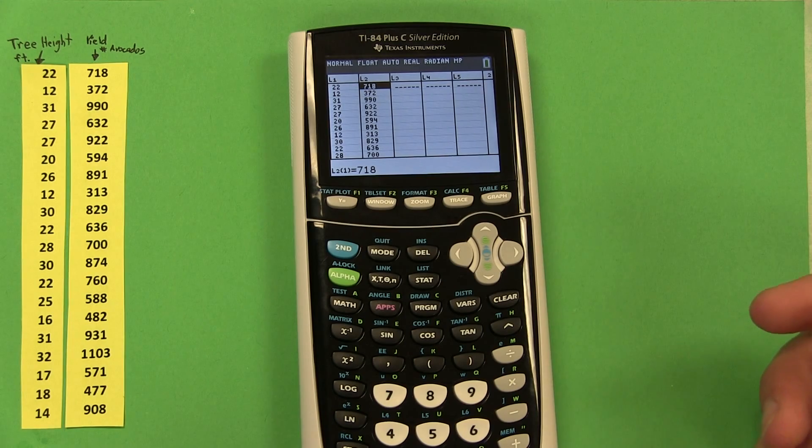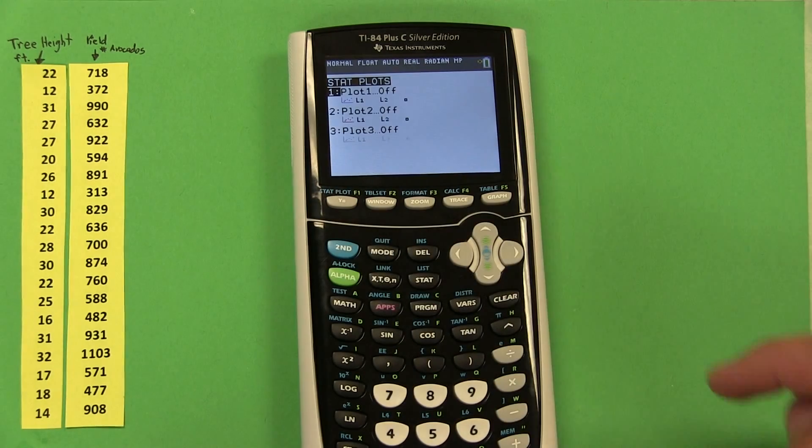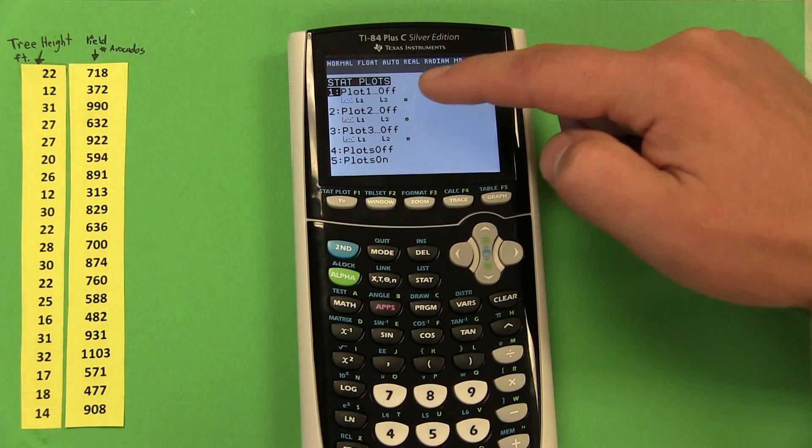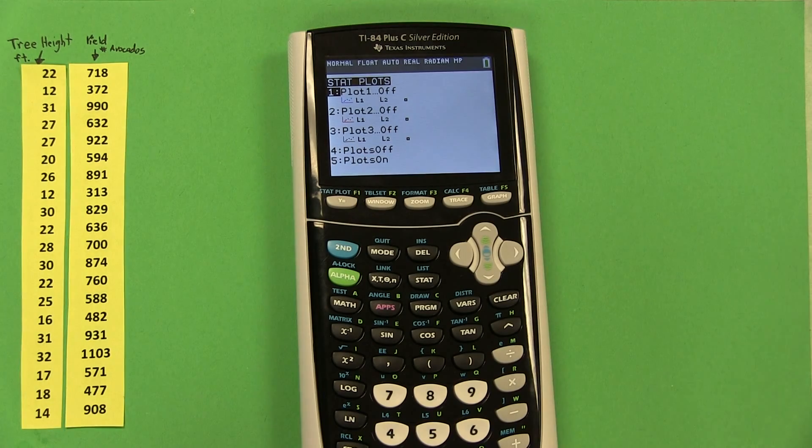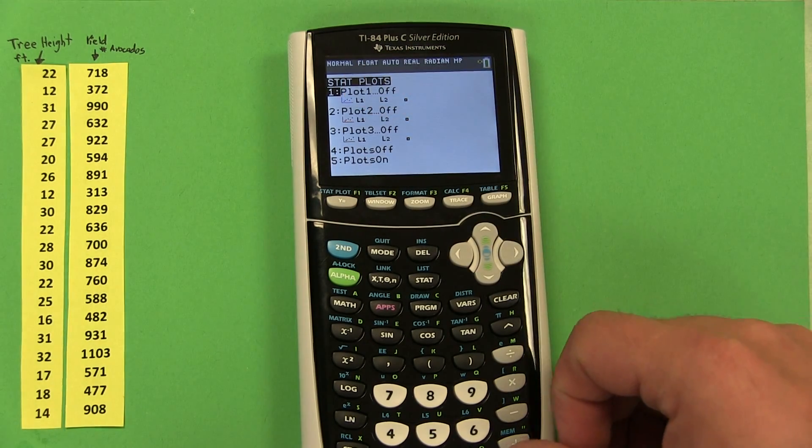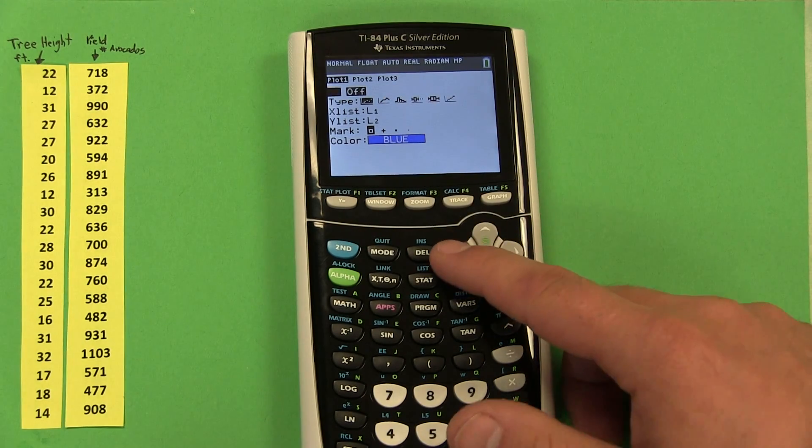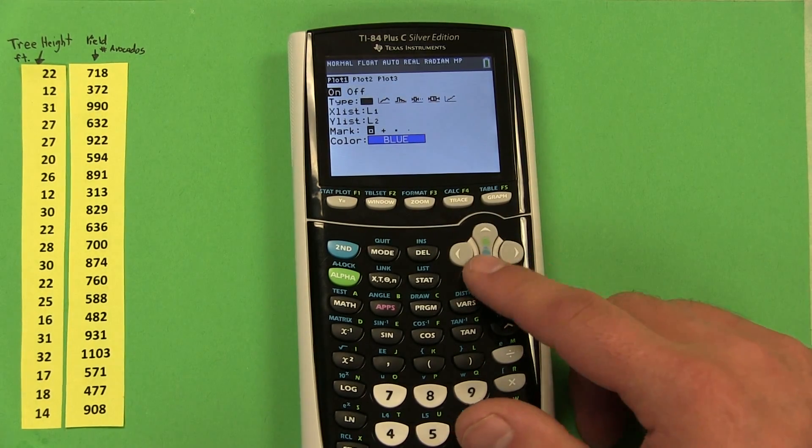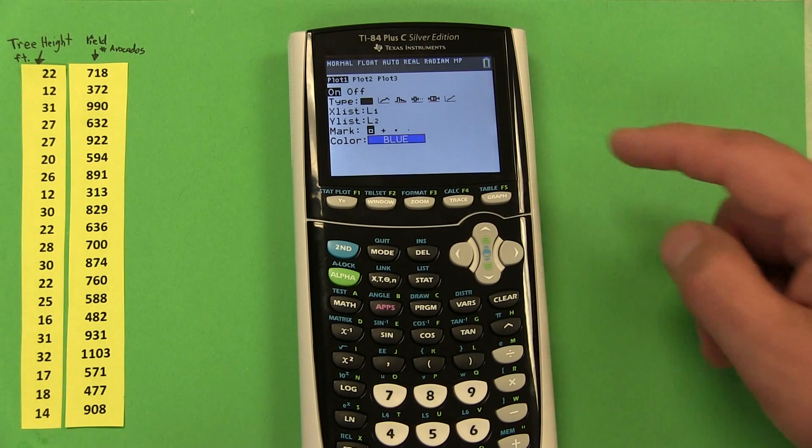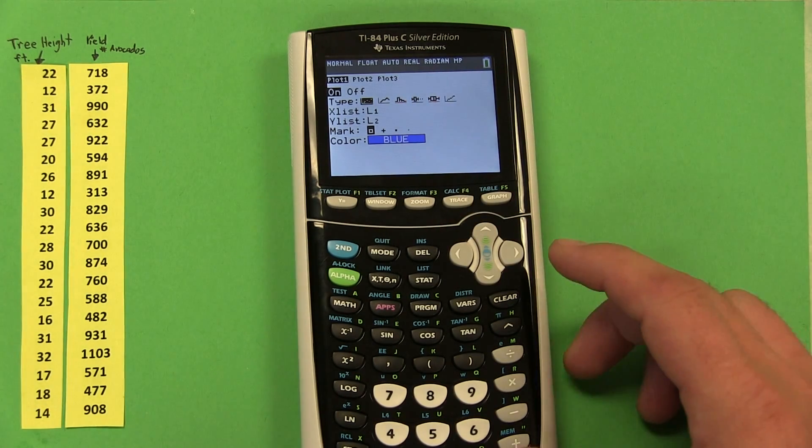Now that all the data is typed in, we're ready to make our scatter plot. To make a scatter plot, press 2nd and then the Y equals button. That will access the stat plots menu. You can make several stat plots at once. Right now, stat plot 1 is highlighted. When I press enter, the first thing I need to do is turn it on. See how it's off right now? Now it's on. You get to select which type of plot you're going to make. These are all different statistical plots. The first option is the one we want, the scatter plot.